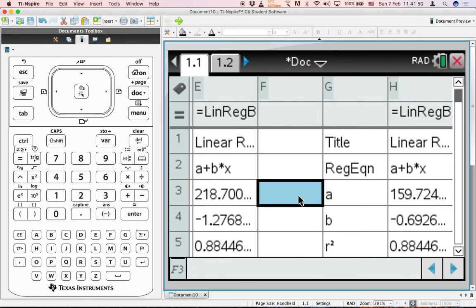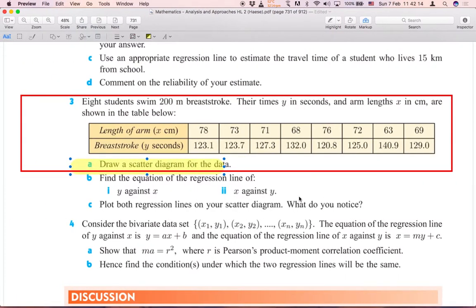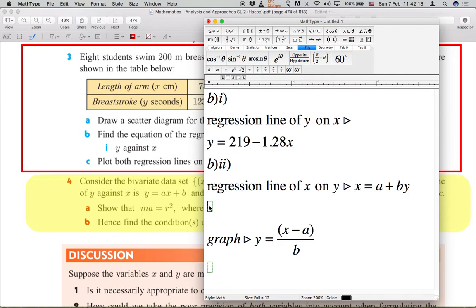And after that, do not forget to round up the constant from given to 3 significant figures. So 160 and negative 0.693 for B. And so our equation in our written style should be X equals to 160 minus 0.693Y. Later on I will tell you why we should change Y to the subject. Because this is for the GDC graphing.